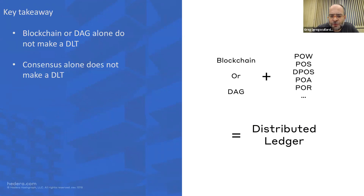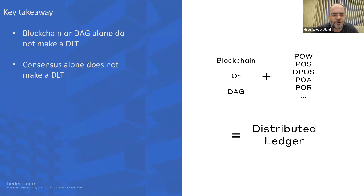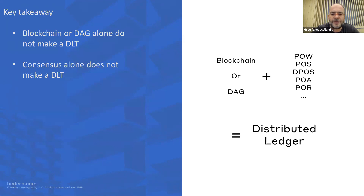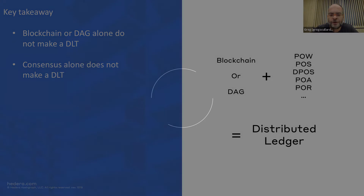One thing I want to leave you with — and it's one that irritates me a little — is that many people compare blockchain to DAGs and put them into two different families. My argument is that blockchain or DAG alone does not make a DLT, and consensus alone doesn't make a DLT either. You need a combination of a data storage method — a blockchain or a DAG — with a consensus algorithm to arrive at a distributed ledger. Comparing blockchain against DAG misses the point; it's often the consensus algorithm that is the most significant element determining decentralization, governance, and so on.